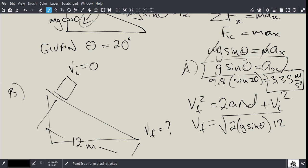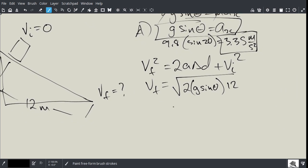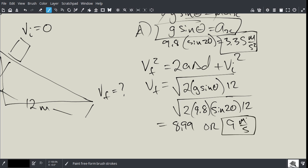And then for this one, let's give ourselves a little bit more room here, and so we're going to get the square root of two times 9.8 times sine 20 times 12, and that's going to give us, so that's 8.99 or just 9 meters per second. Okay, so that's the end of that problem.